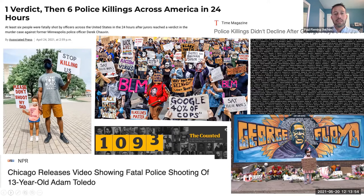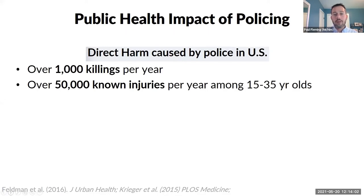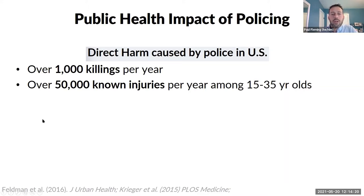If we look to the public health research, it's really starting to document the harms of policing as well. In terms of direct harms caused by police, over 1,000 people per year are killed by police, and over 50,000 young people are known to be injured by police every single year — putting it roughly on par with young people injured in pedestrian accidents. So this is, quite frankly, a public health issue.